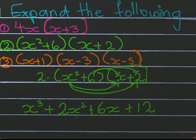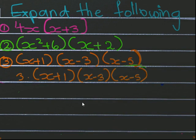Now let's look at the third case. Here we have three sets of brackets, but we won't be doing anything new — we'll just do the same thing step by step. First we'll do the first two brackets, then put that whole result inside a bracket and multiply it with the last bracket. It's going to be long but let's get started.